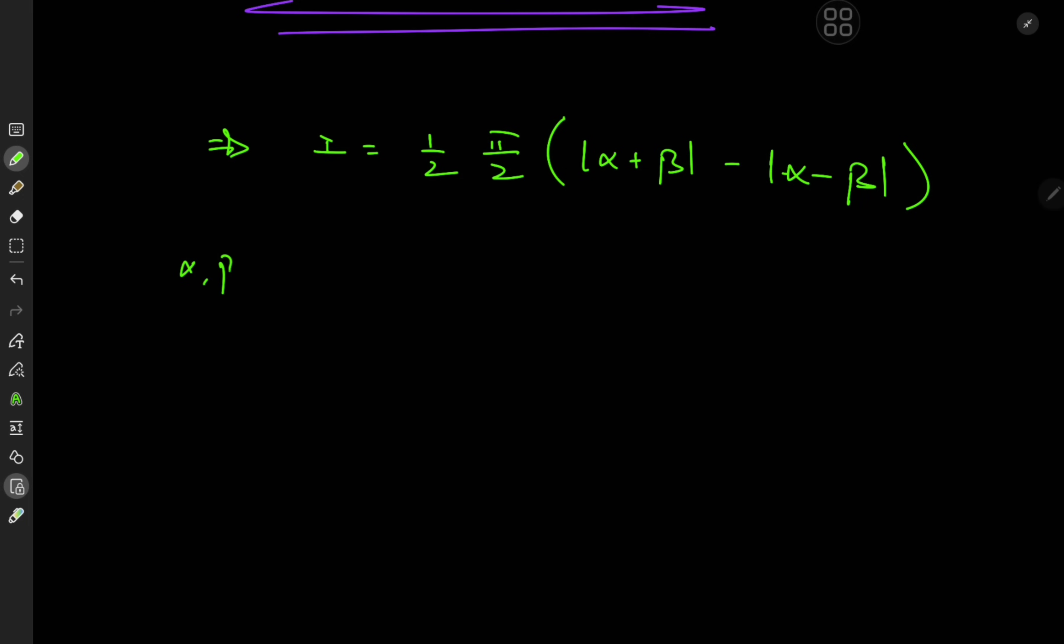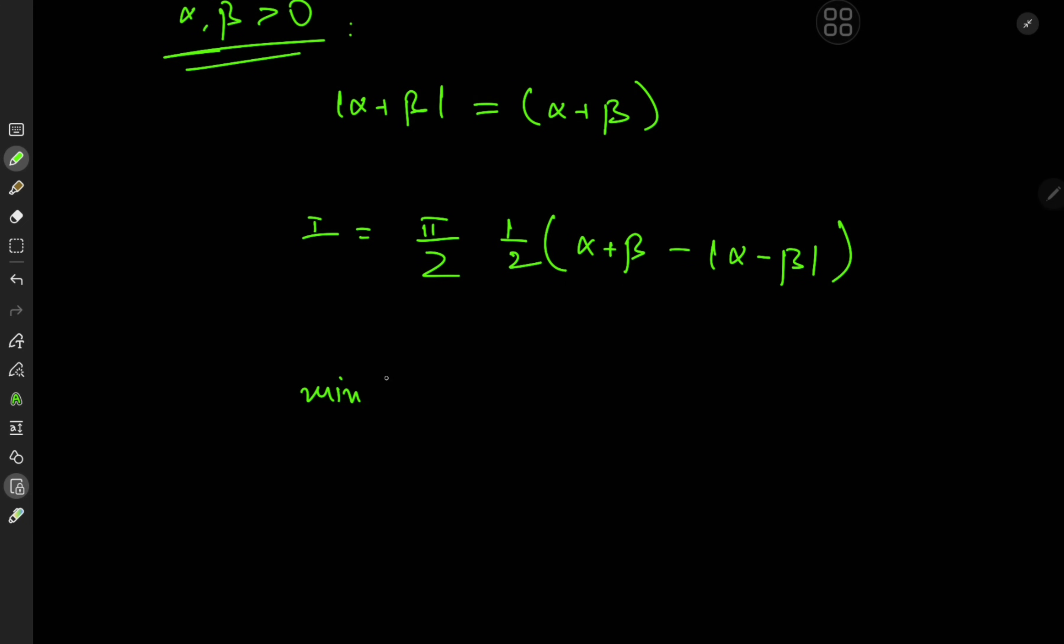So the interesting case is for alpha and beta being positive so for that case we know that the absolute value of alpha plus beta is going to be equal to alpha plus beta. So i here is going to be equal to pi over 2 times one half of alpha plus beta minus absolute value of alpha minus beta and the reason I'm writing it in this form is because there's this interesting relationship for the min function that is the minimum of alpha and beta is defined or can be defined as one half of alpha plus beta minus absolute value of alpha minus beta.